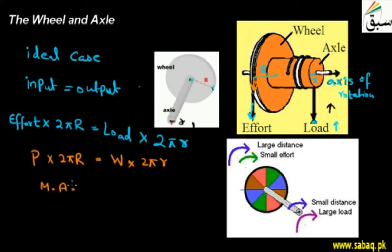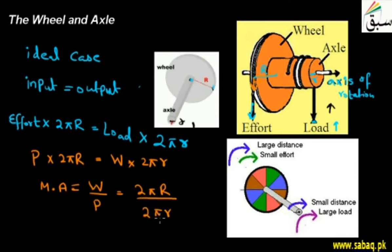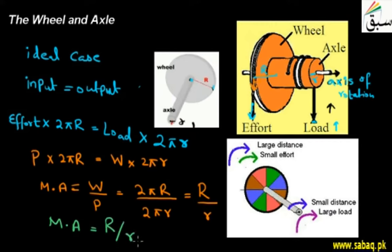If we put this in equation form: effort (P) into 2π into capital R equals W (load) into 2π into small r. We can find the mechanical advantage, which is the ratio of load divided by effort. Canceling 2π from both sides, the mechanical advantage of the wheel and axle equals capital R divided by small r.